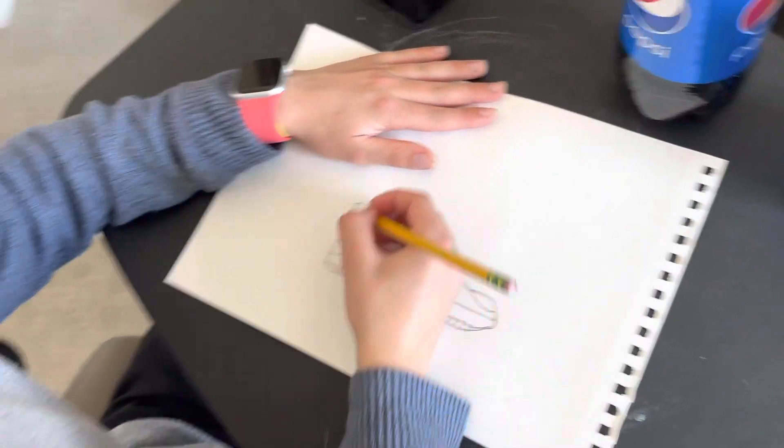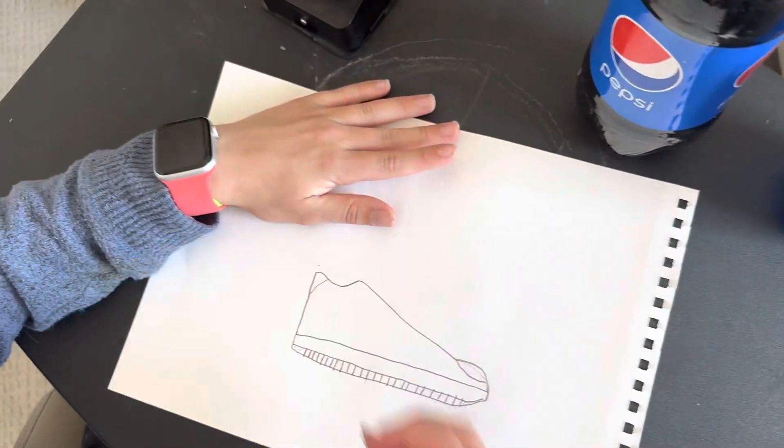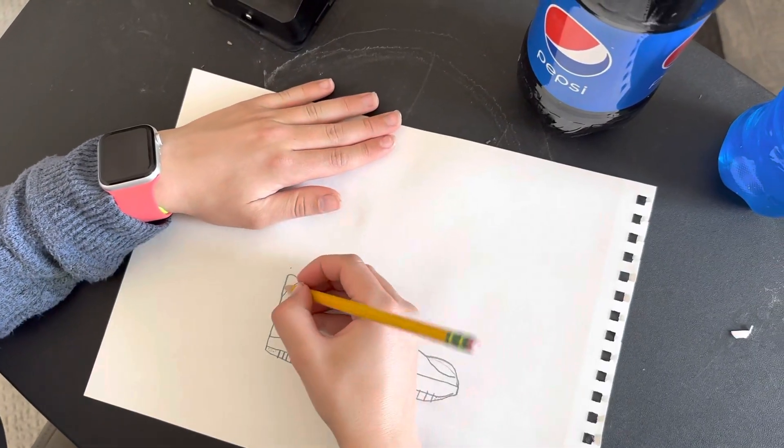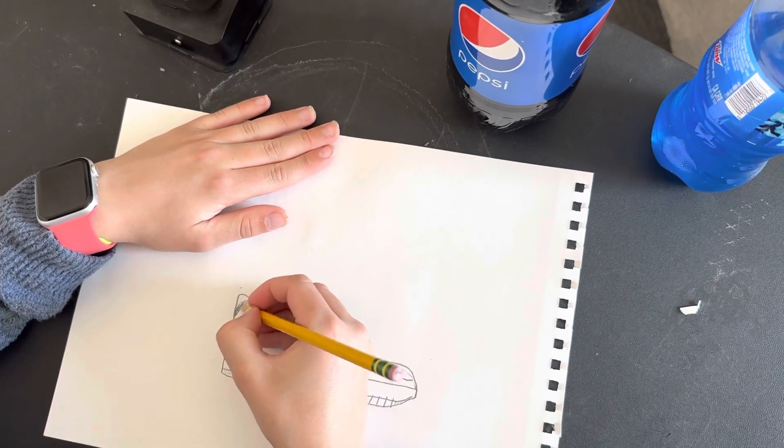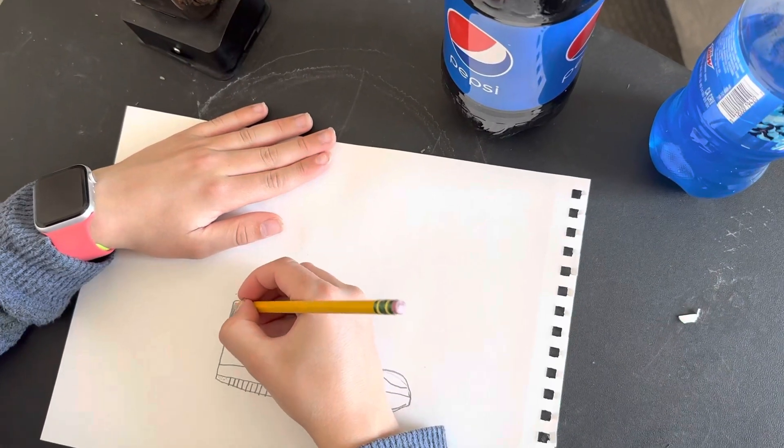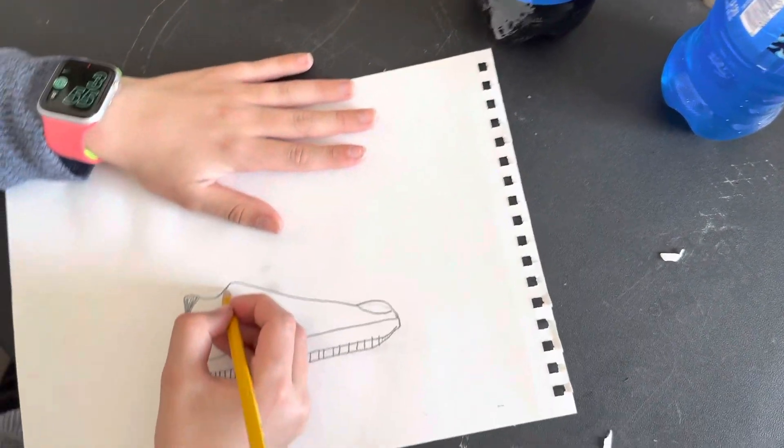So then you gotta come back here, draw that, probably should shade it in so you know it's there. But then you gotta draw the toe box.